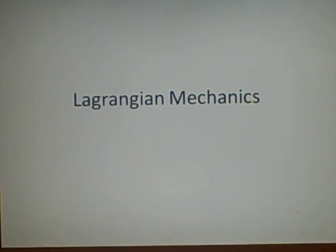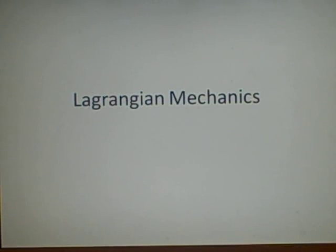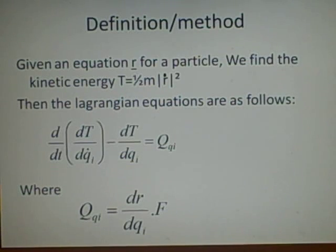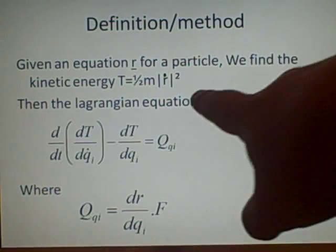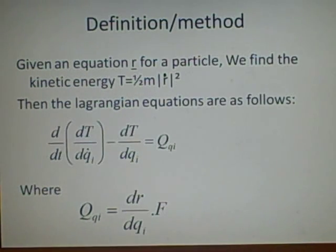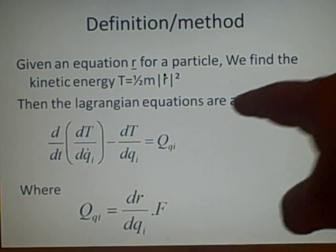This is a lecture on Lagrangian mechanics, a method used to find the second derivative or acceleration of different variables in a system. First, given your equation R for a particle's position, we find the kinetic energy as T equals a half m times r-dot squared. This is exactly the same as the kinetic energy equation T equals a half m v squared, because v equals r-dot, which is velocity.